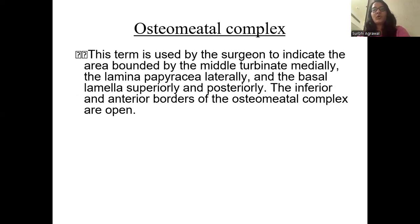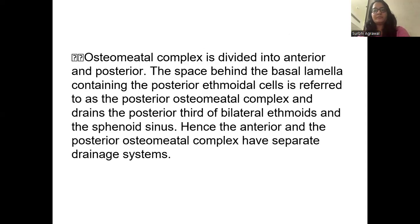The term osteomeatal complex is used by the surgeon to indicate the area bounded by the middle turbinate medially, lamina papyracea laterally, and the basal lamella superiorly and posteriorly. The inferior and anterior borders of the OMC are open. The osteomeatal complex is divided into anterior and posterior. The space behind the basal lamella containing the posterior ethmoidal cells is referred to as the posterior OMC and drains into the posterior third of the bilateral ethmoid and sphenoid sinus. Hence, the anterior and posterior OMC have separate drainage systems.